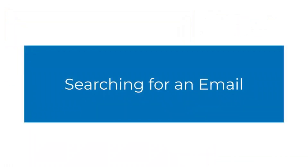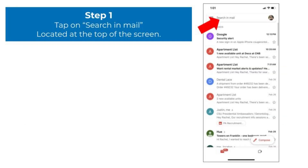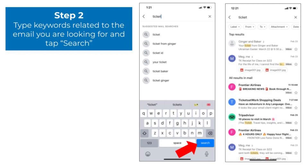Next, we will discuss how to search for an email, which is really helpful if you have tons of emails with important information that you will need in the future. In the Gmail app, tap on Search Mail located at the top of the screen. Next, start to type in keywords related to the email you are looking for — I would start with one or two words, then tap Search. Emails will generate that have those keywords in the subject or within the email message. To view the full email message, tap on the email.